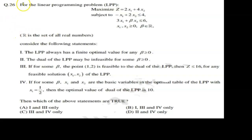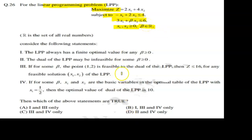The question says that for the linear programming problem — a maximization problem — we have two constraints given, with x_i greater than or equal to 0, and beta is given as a real number. We need to find out which statement is correct. There are 4 statements given.